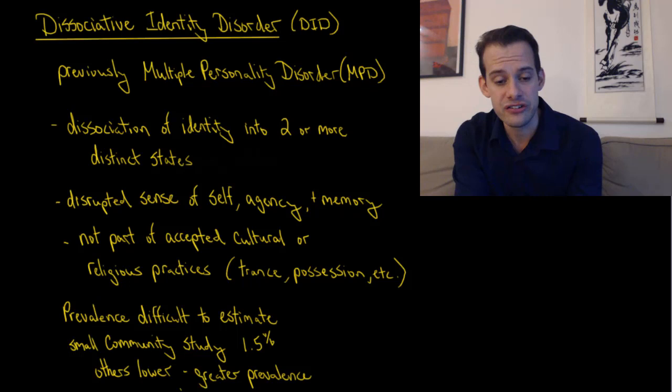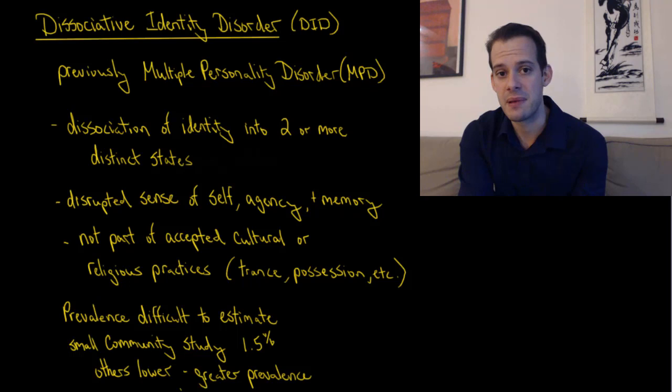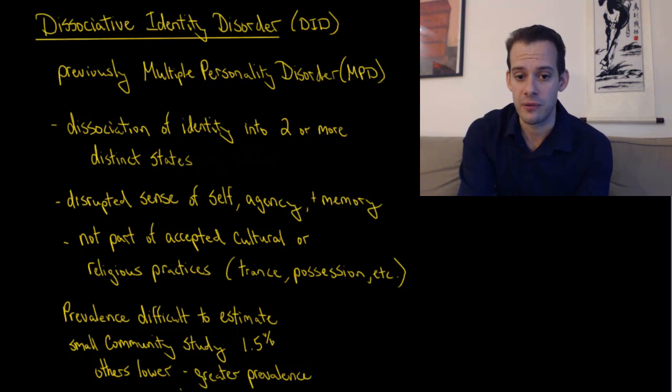Other symptoms are a disrupted sense of self, agency and memory. The person feels they have more than one identity at certain times - maybe they're one identity, at other times another. They have distorted memory or dissociated memories or senses of how much they're in control of their behavior. It's important to note that this is not related to cultural or religious practices that are accepted in a certain area. For instance, if somebody's in a culture or religious tradition where they have trance states or ideas about possession by spirits, then the person's loss of agency or distortion of memory following these types of events would not be considered symptomatic of dissociative identity disorder.